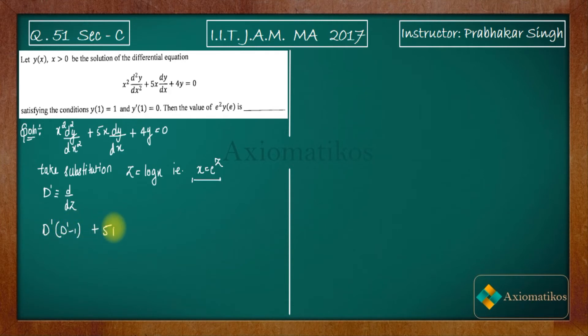Now see, this is a constant coefficient differential equation. If you write its auxiliary equation you will get m(m - 1) + 5m + 4 = 0. You have m² + 4m + 4 = 0, so finally you're getting m = -2, -2.